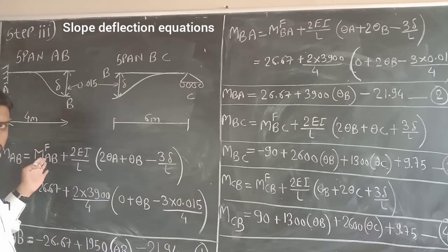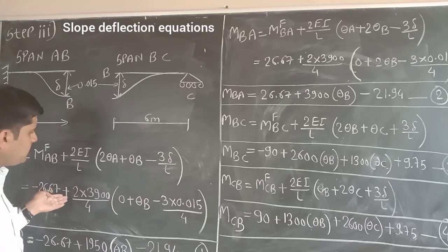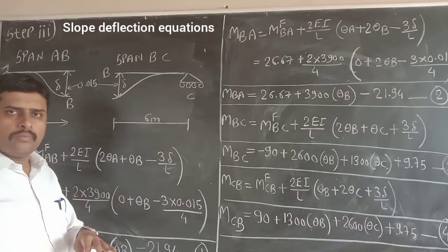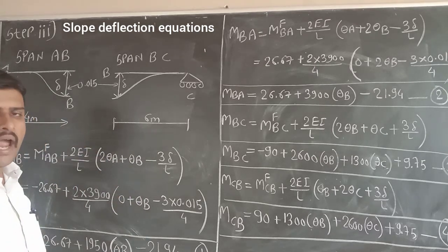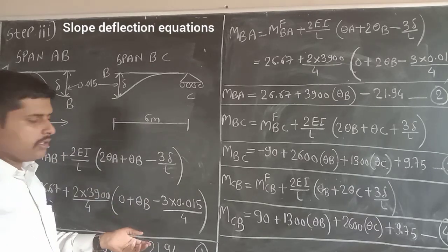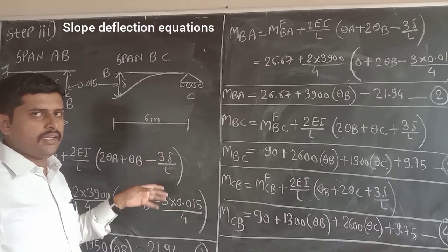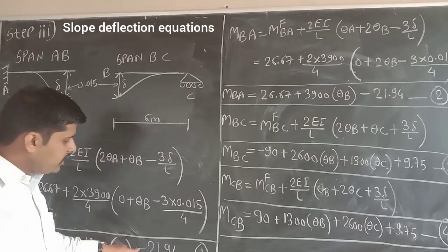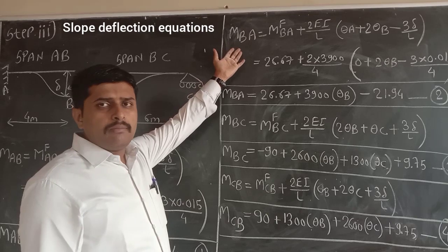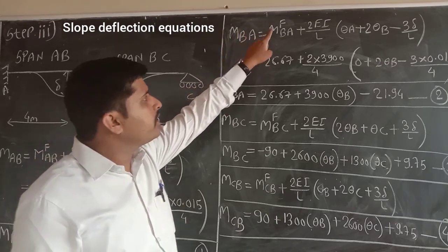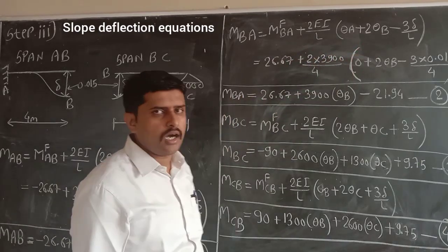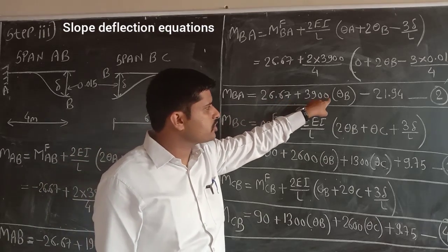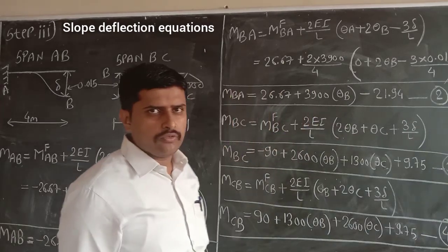Putting in the values: MF_AB is minus 26.67, plus (2EI/L) where EI = 3900 and L = 4 m. Theta A is 0 because support A is a fixed support with no rotation. Equation 1 becomes: minus 26.67 + 1950*theta_B − 21.94. For span BA: MF_BA + (2EI/L)(theta_A + 2*theta_B − 3*delta/L). Equation 2 becomes: 26.67 + 1950*theta_B − 21.94.